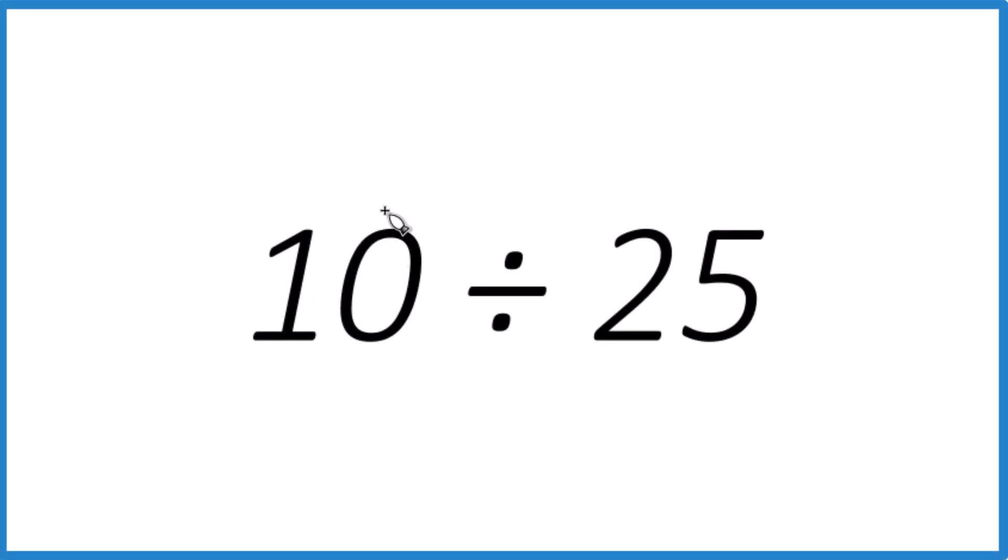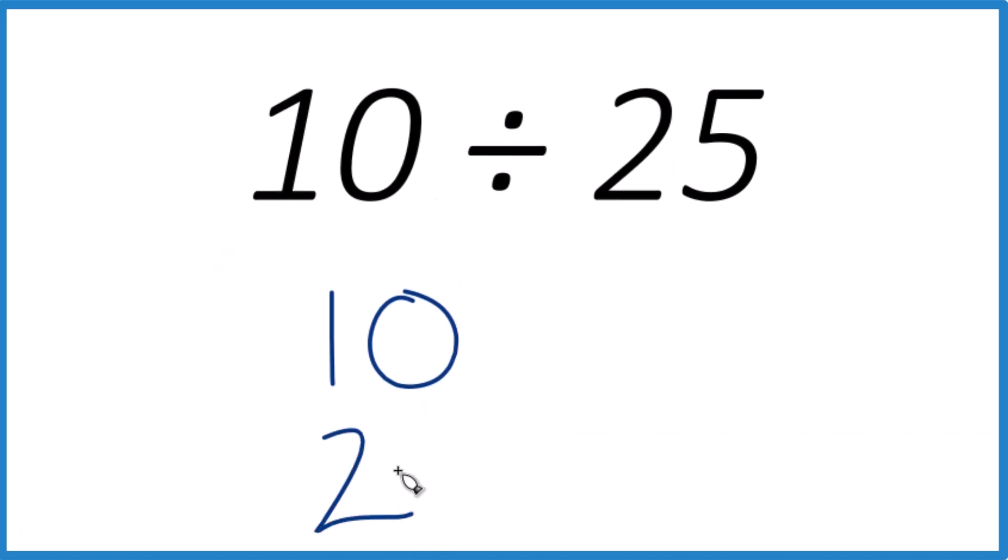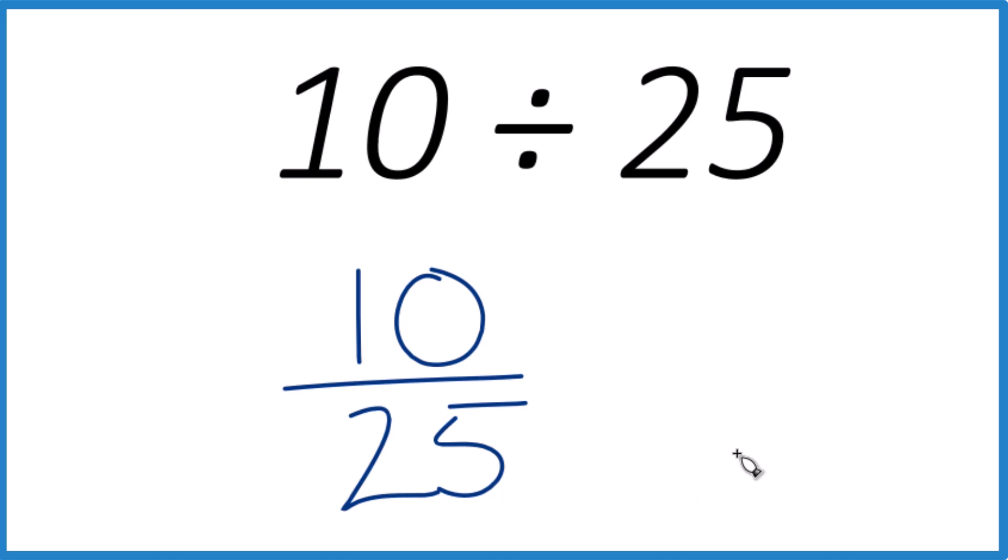Okay, Dr. B here. We're gonna divide 10 by 25. And the way I like to think about it is 10 over 25. So what we want to know is, how many times does 25 go into 10? And since 10 is smaller, we're gonna end up with a number less than one. We're gonna have a decimal.